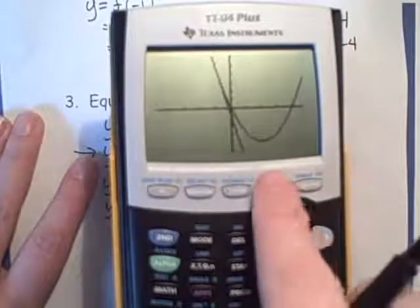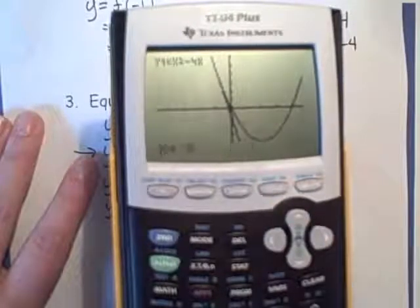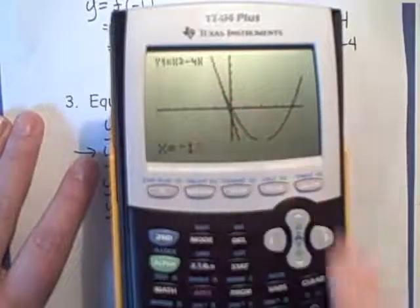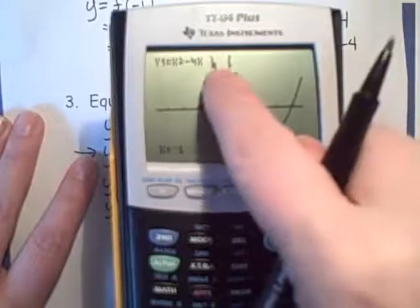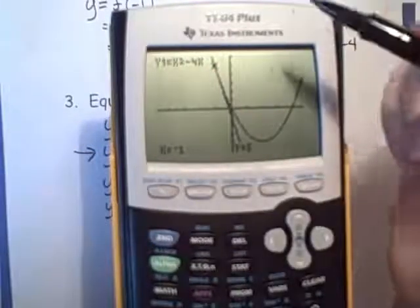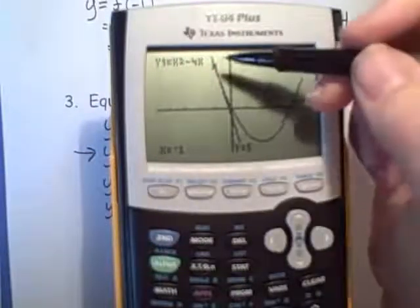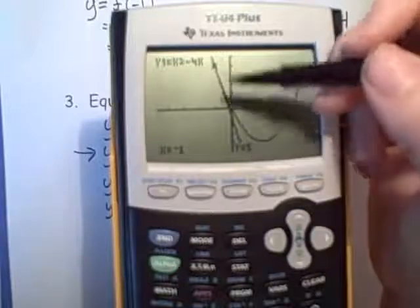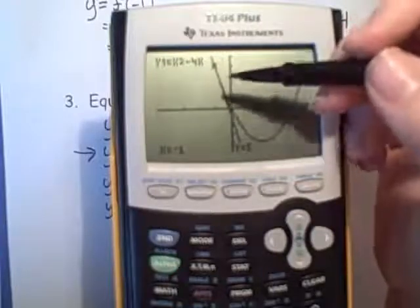Now let's press trace and see where my point of tangency is. There it is, right at negative 1. The thing I'm looking for is that my line actually looks like it's tangent, and it definitely does look like it's tangent.